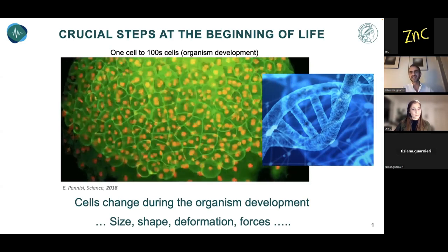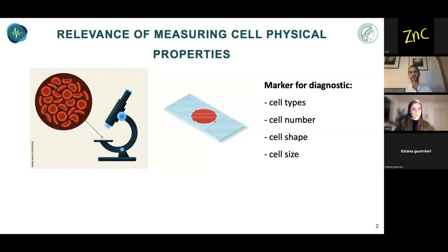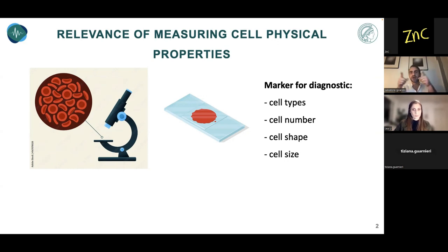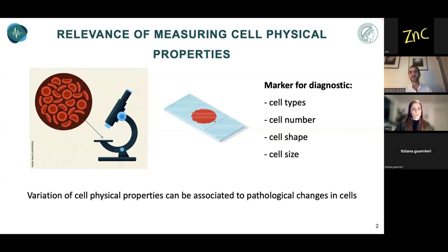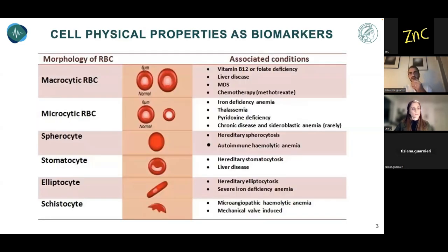To show you this with a simple example: if you go to a doctor and say you're not feeling well, the first thing he will do is a blood check. They take blood, look at it under a microscope, and already you can analyze physical properties of cells — cell type, cell number, cell shape, cell size. All these parameters can be used as diagnostic markers. The value you get comes with a reference range; if it's out of range, it signals something may not be correct.